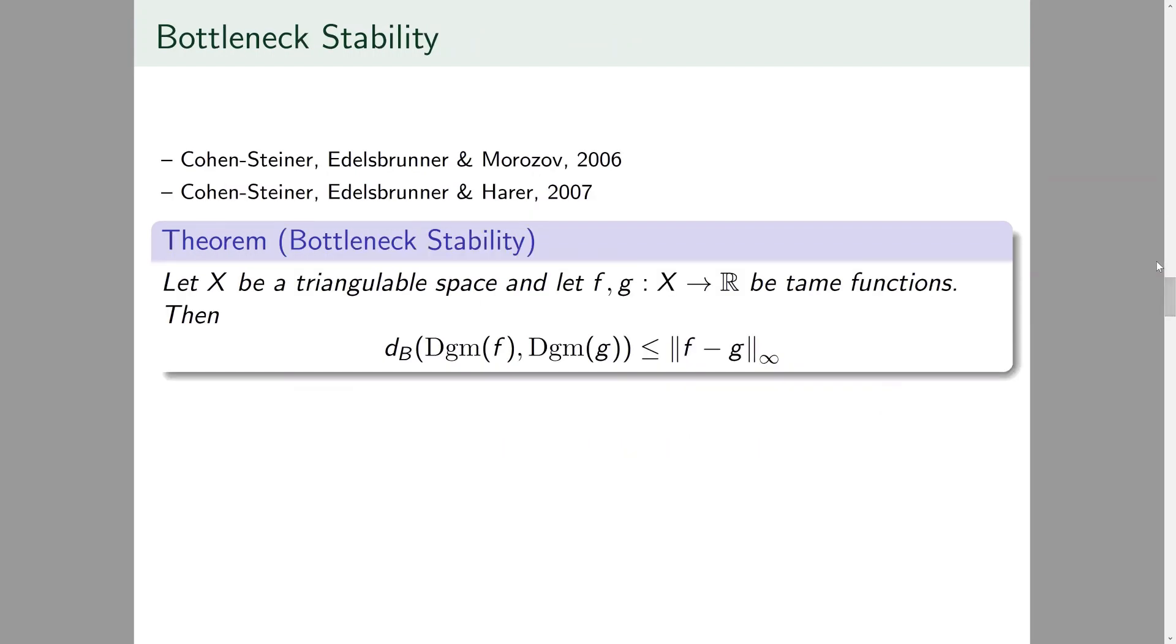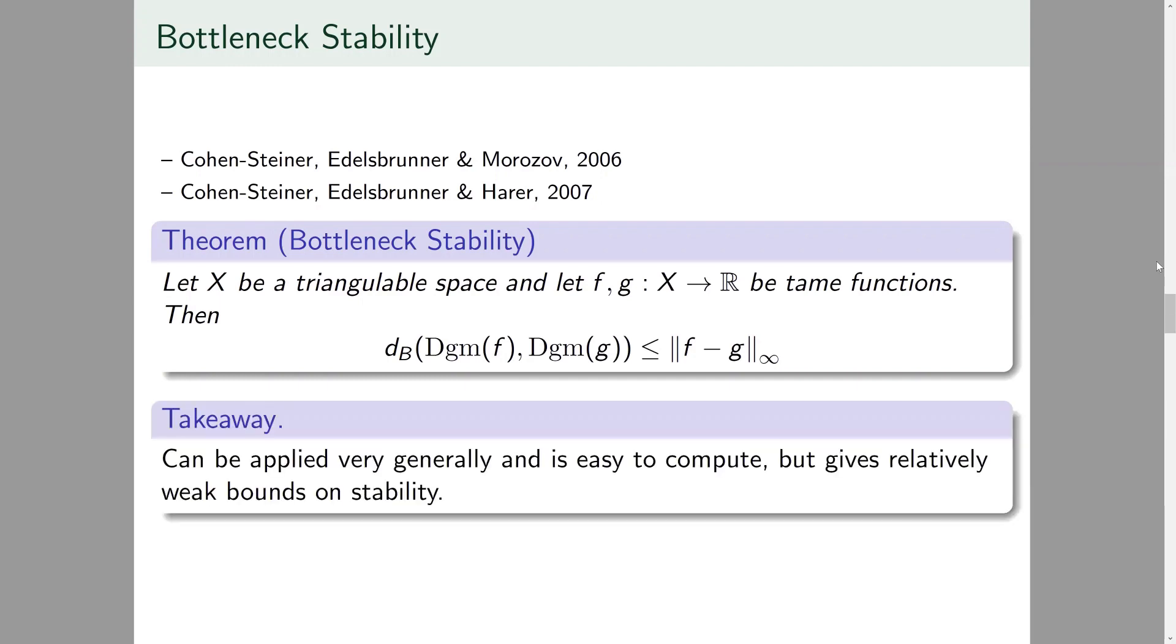This background now allows us to understand the first major stability result underpinning persistent homology: bottleneck stability. Bottleneck stability allows us to bound the bottleneck distance of two persistence diagrams by the supremum distance between tame functions creating their filtrations where a small change in function only induces a slightly small change in the filtration and only a slightly small change in the persistence diagram. Bottleneck stability can be applied in a fairly general setting and is easy to compute although the bound it gives is fairly weak owing to the relative weakness of the bottleneck distance.